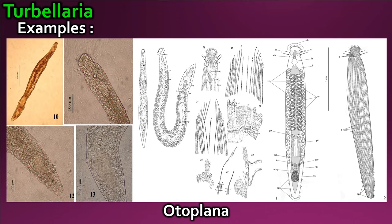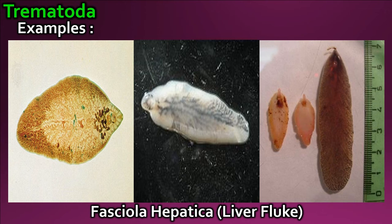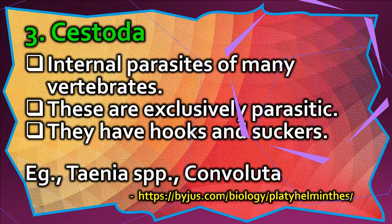Trematoda are internal parasites of humans and other species; these are mostly parasitic and hooks and suckers are usually present. Cestoda are internal parasites of many vertebrates and are exclusively parasitic; they have hooks and suckers.